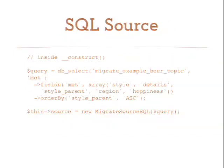Here's what the constructor would look like — there are three properties and one function for setup. Here's a SQL source: it's a DBTNG query pulling from a beer topic table, picking out a couple of fields, and setting a sort. You take that query and pass it into the MigrateSourceSQL class. It's able to turn that into count queries — it can figure out how many things you're going to be importing. You're not specifying a list of fields because it can pull that out of the query.